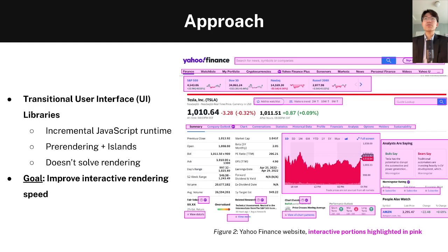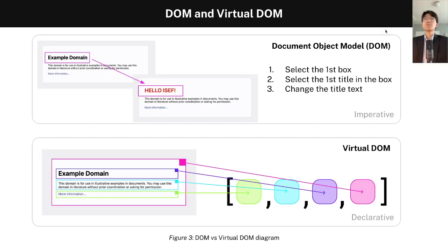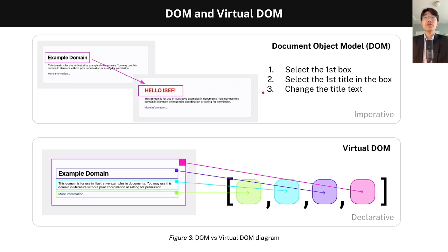But what happens when we click on one of these interactive portions? Doesn't it use the same exact rendering algorithm? Million's aim is to improve the actual interactive rendering speed. Before we get into how Million works, let's talk about the Document Object Model and the Virtual DOM. The Document Object Model is the native way of rendering web user interfaces. In order to make a change — for example, from example domain to helloicef — we essentially need to define three imperative procedural steps to make that change.